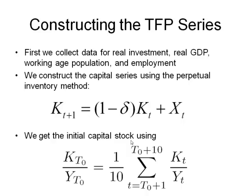We construct the capital series using the perpetual inventory method. You have your undepreciated capital today, you add your total investment, and then you get your capital tomorrow. So as long as you have an initial capital stock and your investment series, you can roll out the entire series for capital. Now the tricky question is: how do we know the initial capital stock?